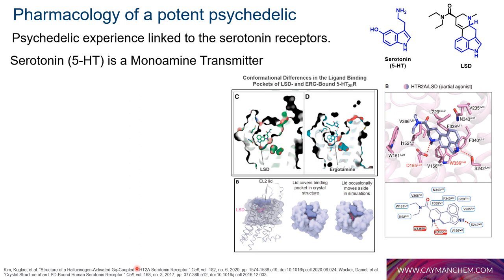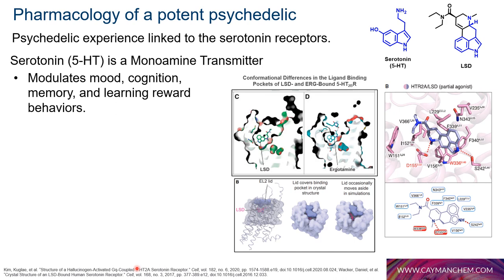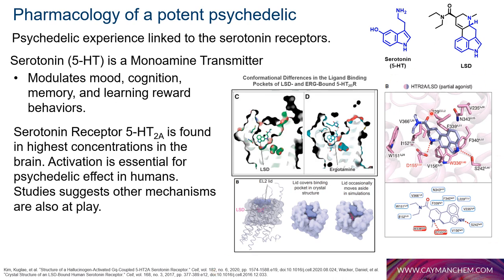The neuroplastic effects of psychedelics are primarily associated with serotonin receptors. Serotonin is a neurotransmitter that modulates mood, cognition, memory, learning, and reward behaviors — commonly referred to as the 'happy molecule.' It has a tryptamine backbone with a hydroxy group at the five position, called 5-HT for 5-hydroxytryptamine. Serotonin can fit within the ergoline structure of LSD, which is why LSD binds to these receptors. There are seven types of serotonin receptors, labeled 5-HT1 through 7.